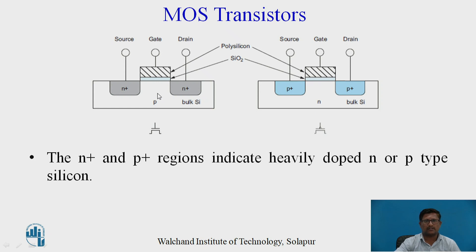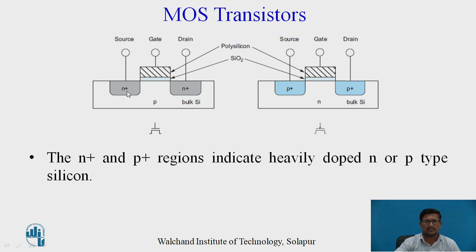Each MOSFET actually has four terminals, but typically only three are shown. The fourth terminal is the substrate, which is generally connected to the source. The three visible terminals are source, gate, and drain — the same for both PMOS and NMOS. The larger part is the bulk silicon, known as the substrate. With a P-type substrate the device is NMOS; with an N-type substrate it is PMOS. There are two heavily doped N-plus regions for NMOS and two heavily doped P-plus regions for PMOS.